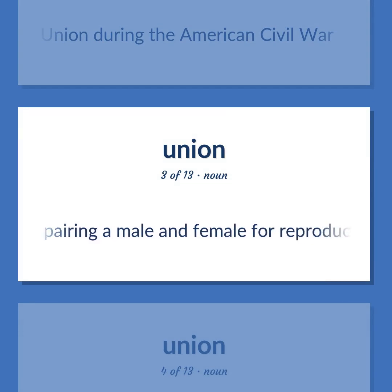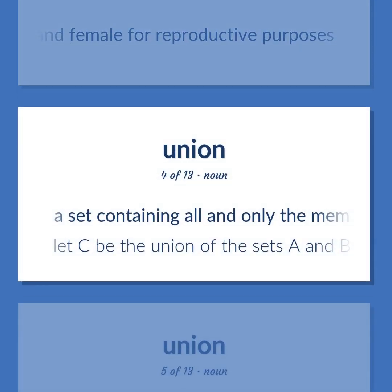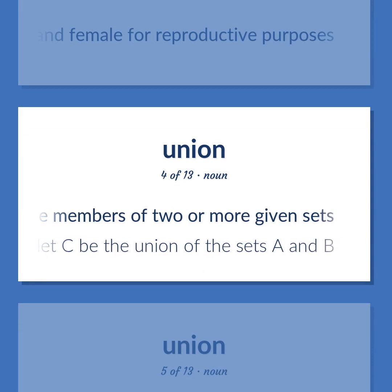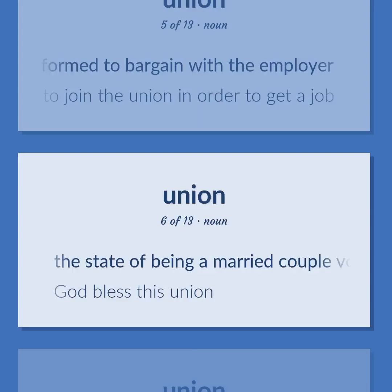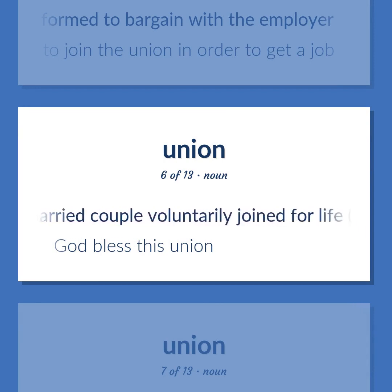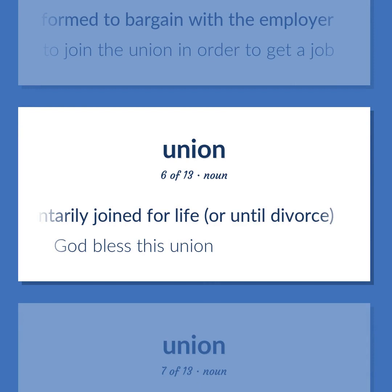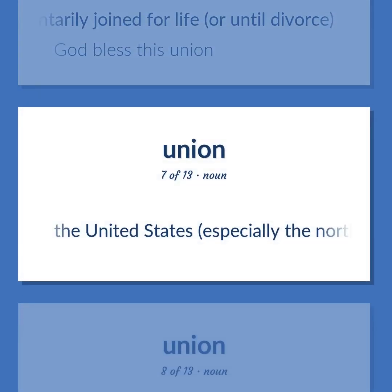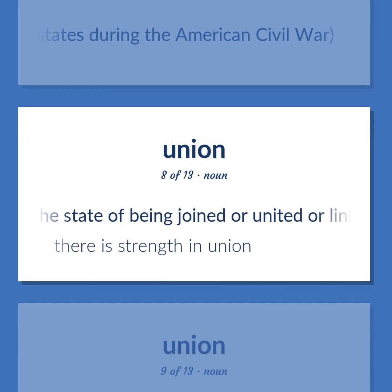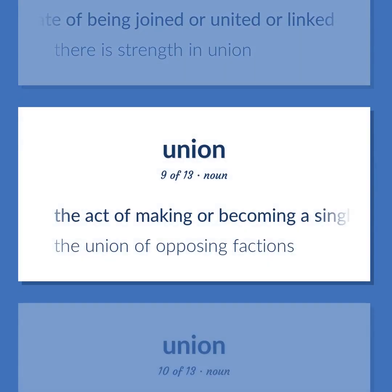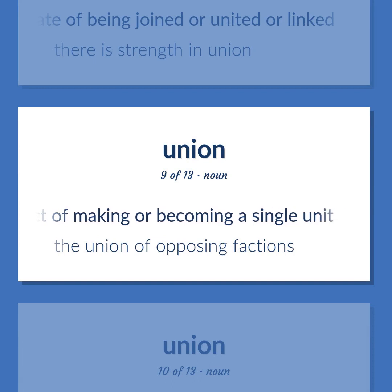Union: The act of pairing a male and female for reproductive purposes. A set containing all and only the members of two or more given sets — let C be the union of the sets A and B. An organization of employees formed to bargain with the employer — you have to join the union in order to get a job. The state of being a married couple voluntarily joined for life or until divorce — God bless this union. The United States, especially the northern states during the American Civil War. The state of being joined or united or linked — there is strength in union. The act of making or becoming a single unit — the union of opposing factions.